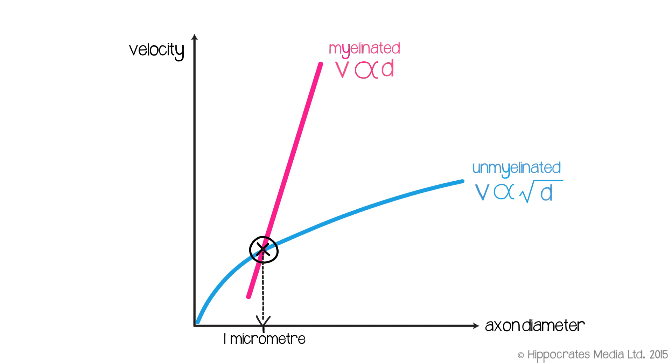There's some argument about whether the curve and the straight line cross in the correct position, and people have challenged Rushton's results and suggested that 1 micrometer is perhaps not the place where the crossover takes place. But the general conclusion still stands, that small fibers tend to be unmyelinated, and large fibers tend to be myelinated.